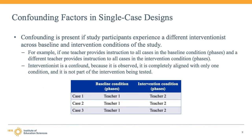Let's present a simple example to illustrate a confounding factor in a single case design study. Confounding is present in a single case design if study participants or cases experience a different interventionist across the baseline and intervention conditions of the study. For example, if one teacher provides instruction to all cases during all phases in the baseline condition and a second teacher provides instruction to all cases during all phases in the intervention condition, the interventionist is a confound because it is observed, it is completely aligned with only one condition, and it is not part of the intervention being tested.